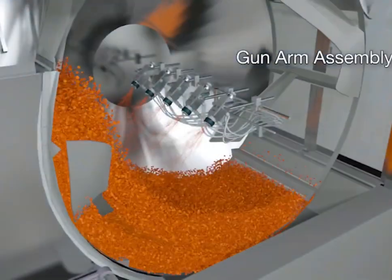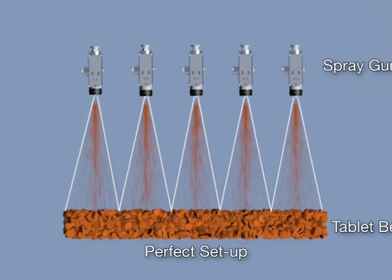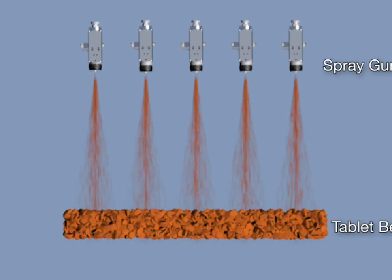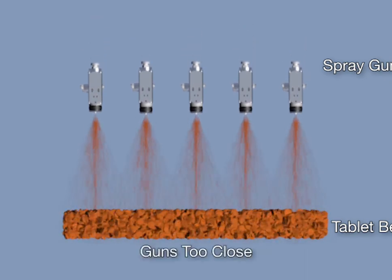A gun arm assembly permits easy access to each spray gun for adjustments, priming and cleaning. It is critical that the gun to bed distance is correct to ensure uniform coverage of the tablets.